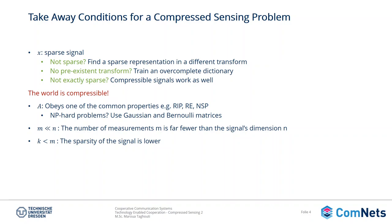If the existing transform cannot give you a sparse signal, the problem is already solved. For non-pre-existing transforms, we can simply train an over-complete dictionary — we will see in detail how to obtain one. And the third question regarding sparsity: what if the signal obtained at the end is not exactly sparse? We know that physical signals, for instance temperature or humidity, could be compressible signals as well. It has been proved that compressible signals work as fine as sparse signals with only a minor error, which is not harmful for compressed sensing.